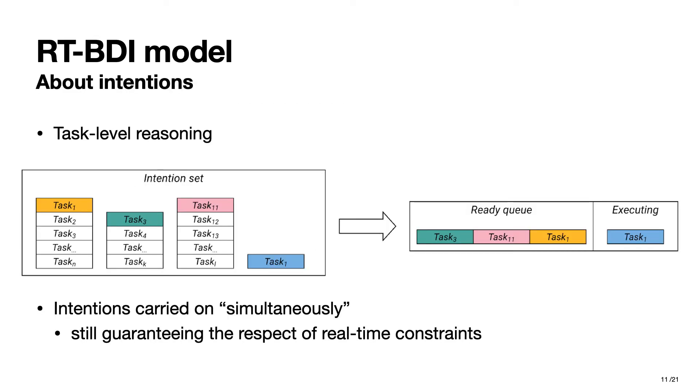Regarding intentions, a crucial point of our model consists in the fact that the agent has to choose a set of feasible intentions. In the real-time domain, feasible means that the execution of all the tasks the agent has committed to terminates successfully without any deadline miss.